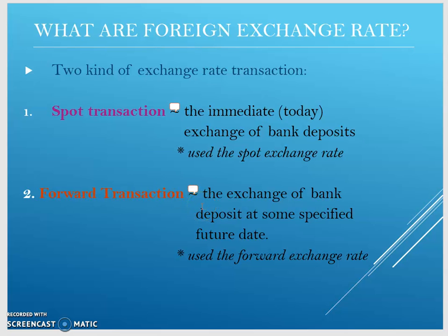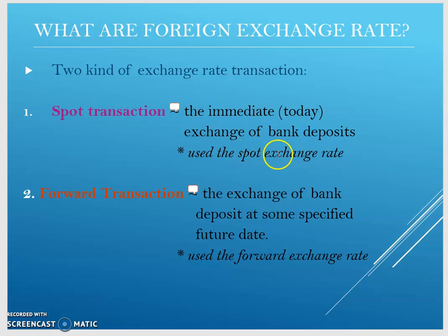What are foreign exchange rates? There are two kinds of exchange rate transactions. The first one is spot transactions. A spot transaction is the amount of currency traded for another today — it is the price a person would have to pay in one currency to buy another currency immediately. In short, a spot transaction is the immediate exchange between two countries' currencies, using the spot exchange rate.